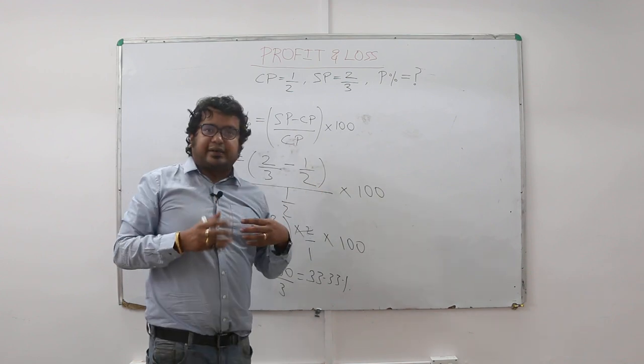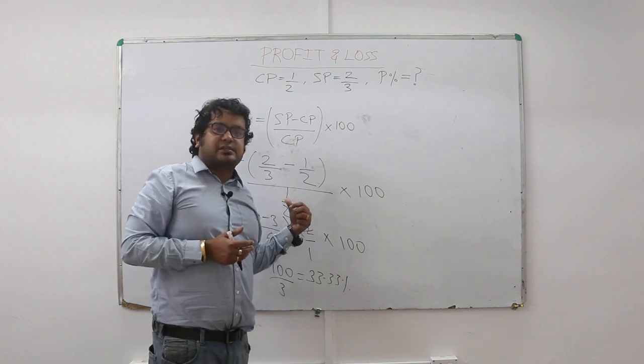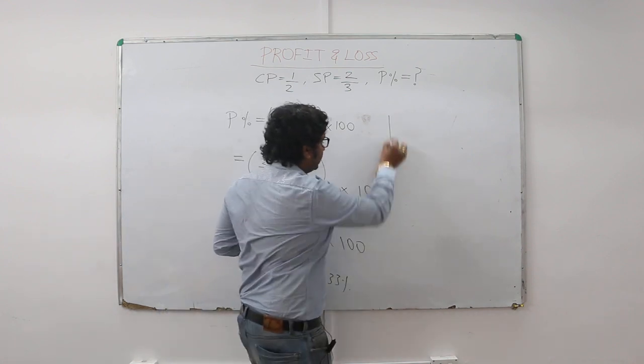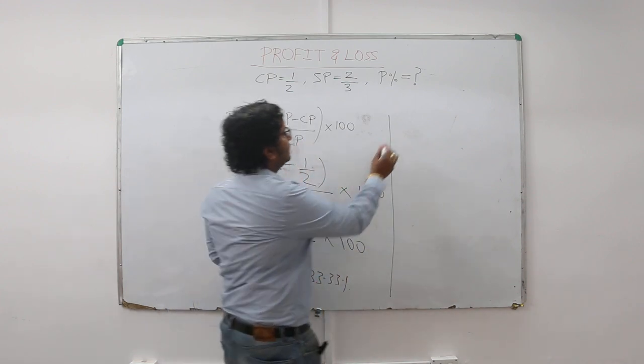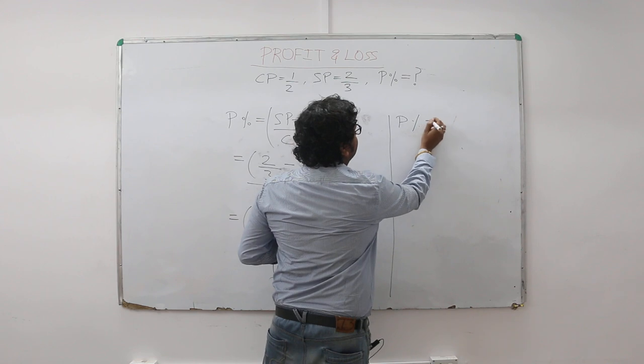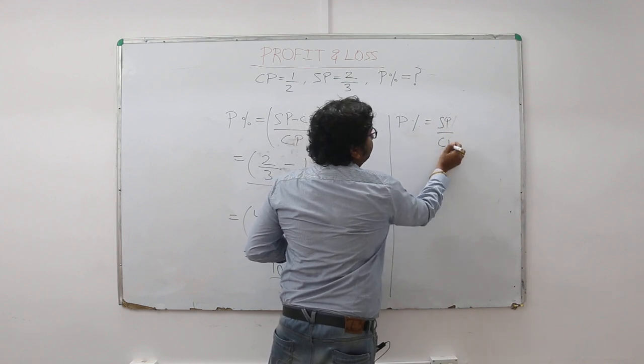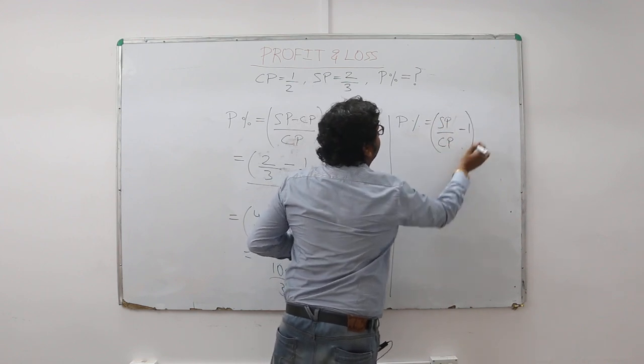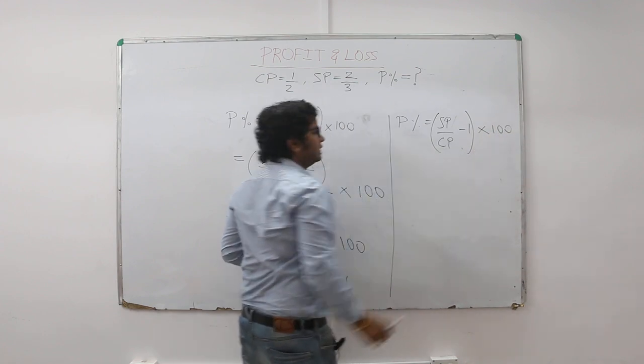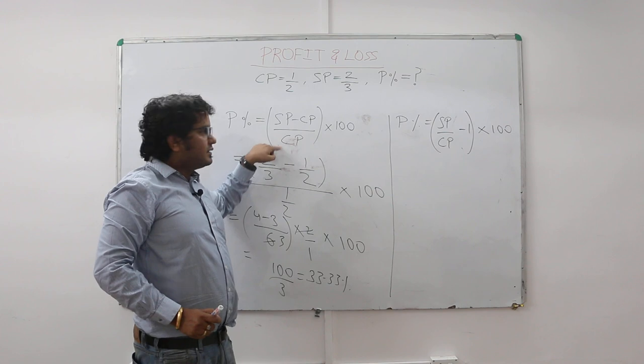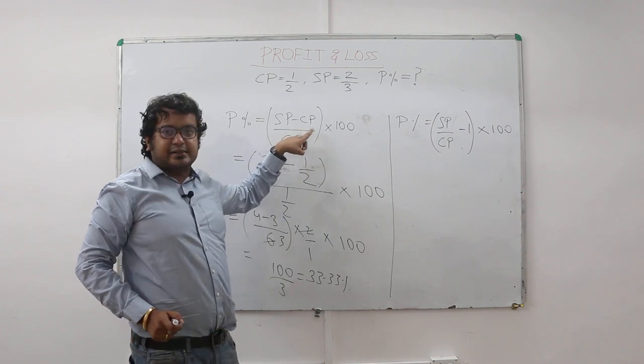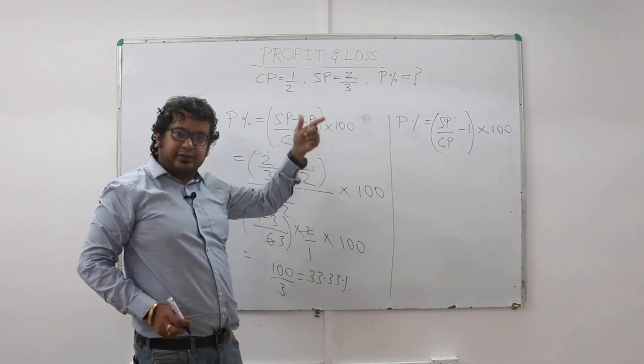Let me provide a twin concept to this concept that we have learnt in school. The same formula, let us write it down as profit percentage is equal to SP by CP minus 1 into 100. If you divide this SP by CP, CP by CP becomes 1. So you can write it as minus 1 whole into 100.